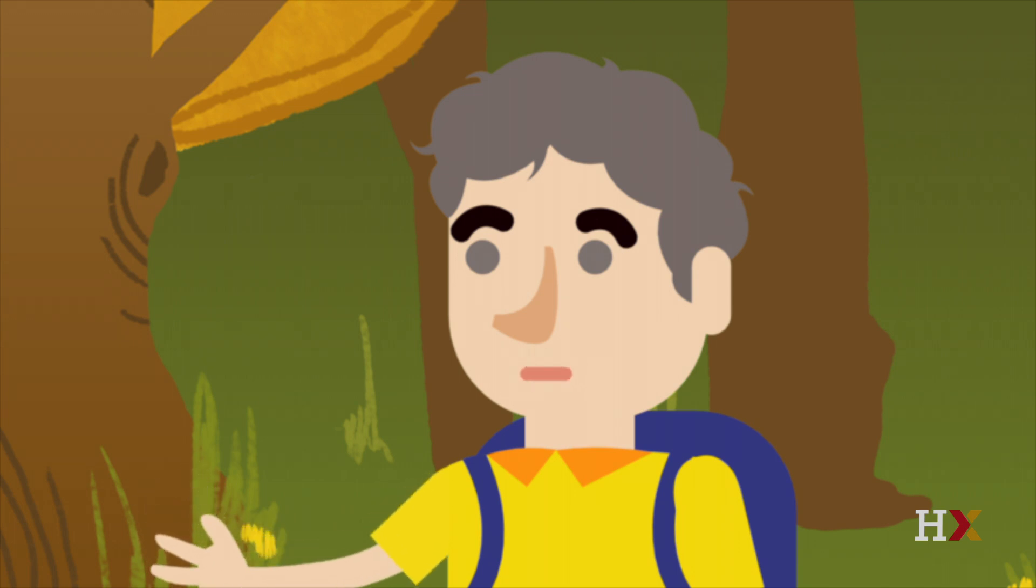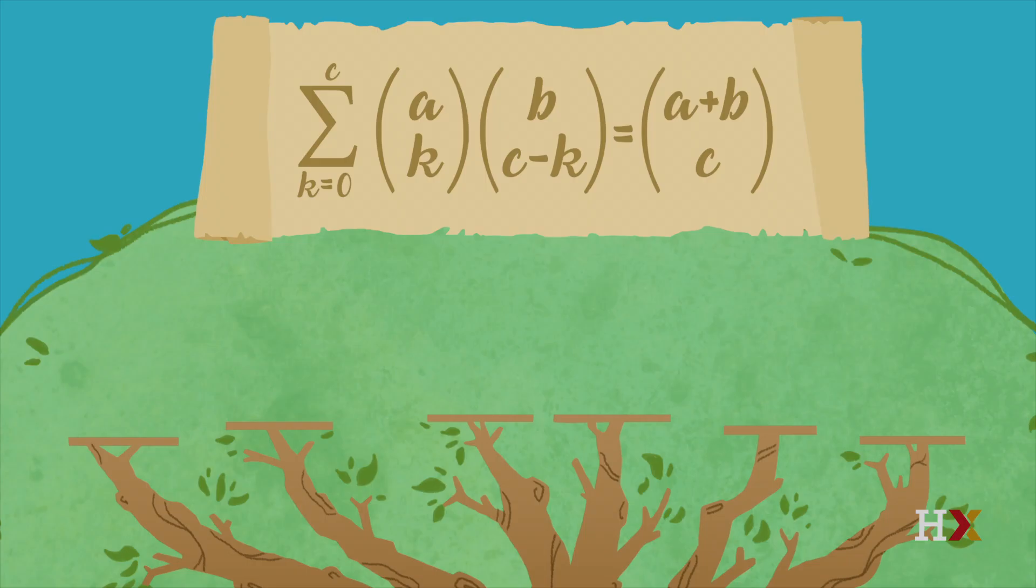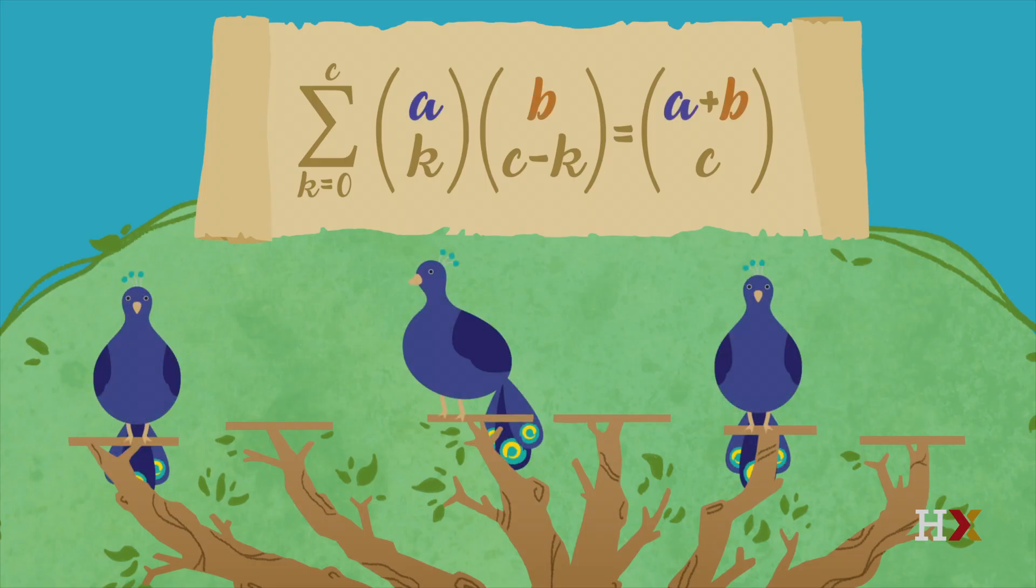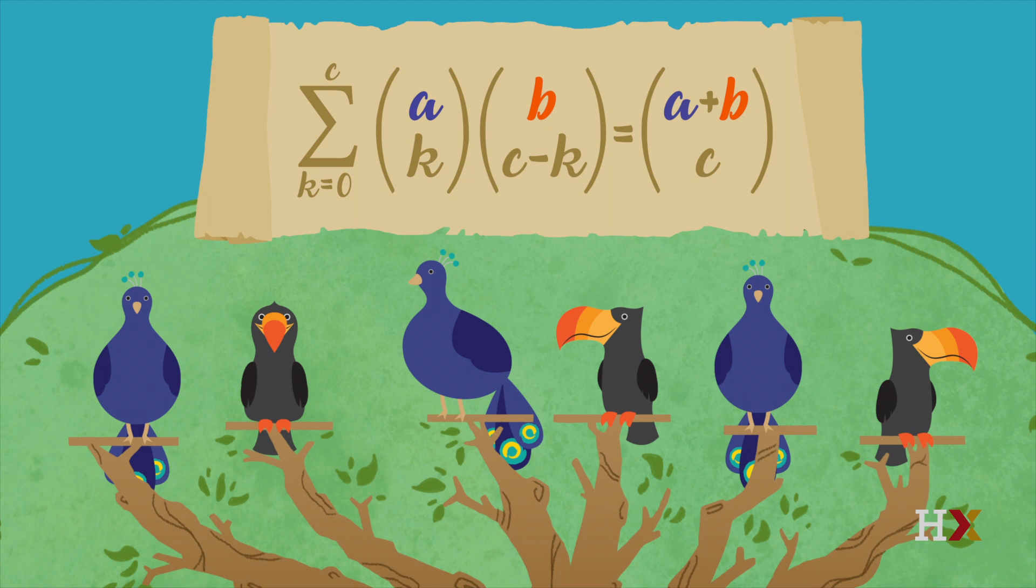I see peacocks and toucans flying around trying to get on the top branches, but what does that have to do with the formula on the scroll? Let's say there are a peacocks and b toucans vying for the six top branches. The number of possibilities for which birds get to perch on top branches is a plus b choose six. That's the right-hand side, when c is six. Okay, but what about the left-hand side?